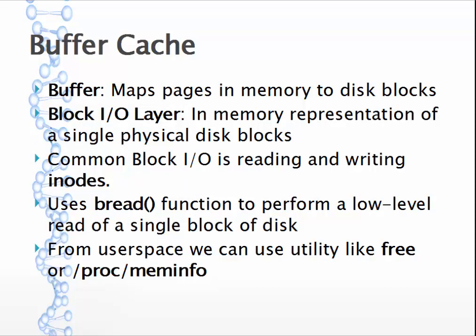Buffer is used to map the pages in memory to disk blocks - it acts as a descriptor that maps your pages in memory to disk blocks. The main function of buffer is to reduce disk access, because your disk is orders of magnitude slower compared to physical RAM - nanoseconds versus milliseconds.